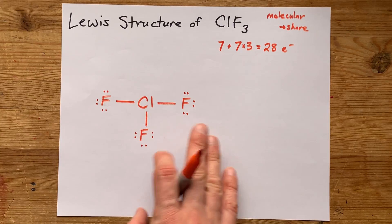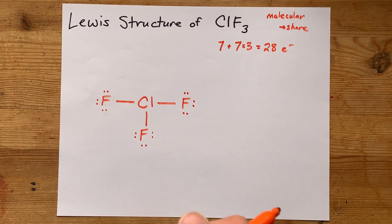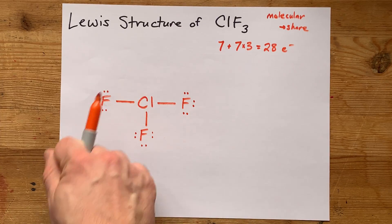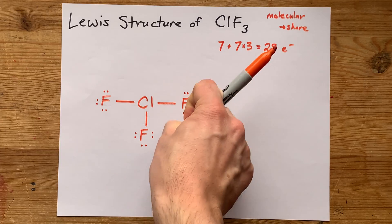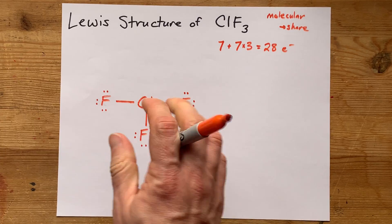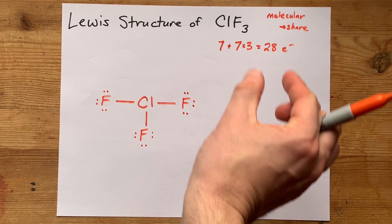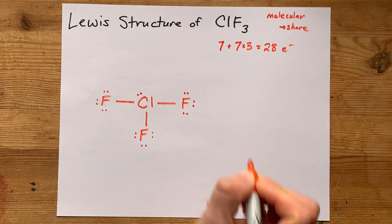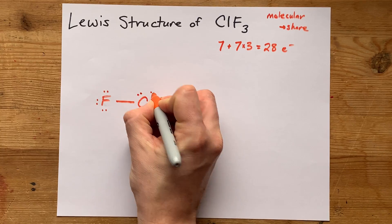But we only have 24 electrons total, I said. We need 28. If you complete the octets on all of the outer atoms and have electrons left over, my strategy is to dump those extra electrons onto the central atom. So here's 25, 26, and 27, 28.